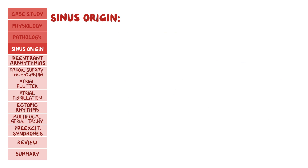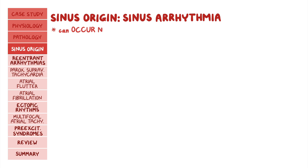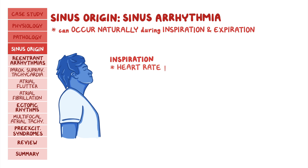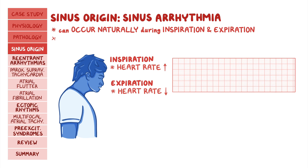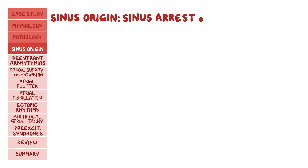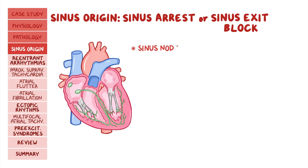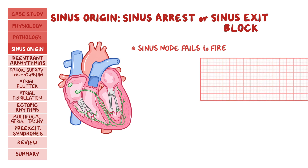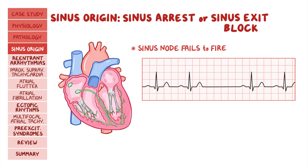Another arrhythmia of sinus origin is sinus arrhythmia. This arrhythmia can occur naturally during inspiration and expiration. During inspiration, the heart rate increases, and during expiration it decreases. So on ECG, the rhythm may appear irregular, but it is in fact a normal variant. Finally, sinus arrest, or sinus exit block, occurs when the sinus node fails to fire. On an ECG, there is simply a flatline pause. Fortunately, if the sinus node can't fire, the AV node or virtually any other myocardial cell can take over.